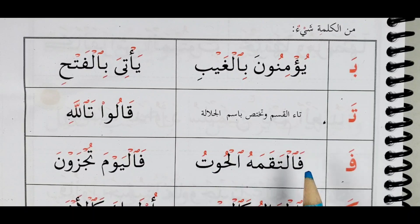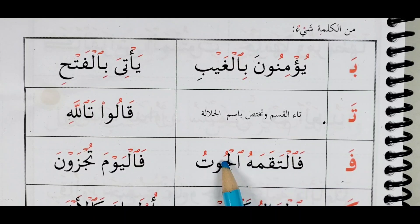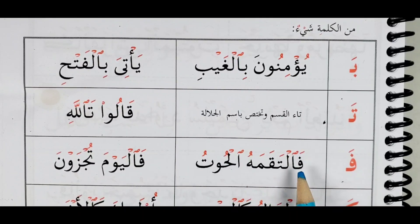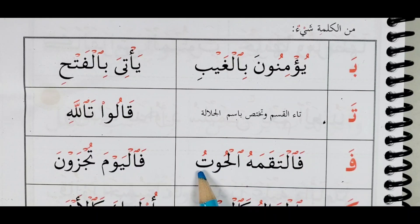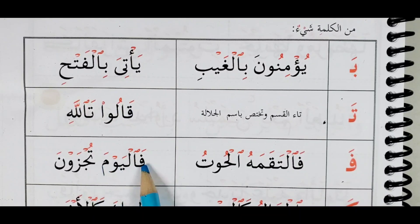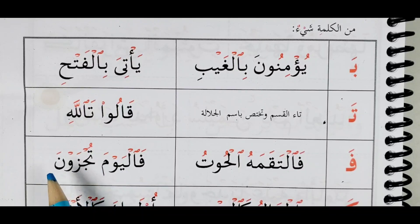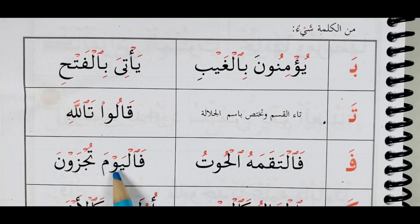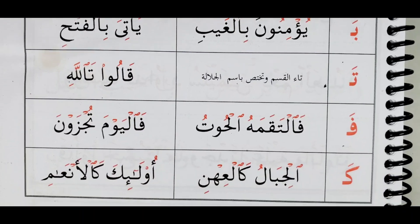Then فالتقمه الحوت — you come from the فاء to the لام, skipping sign and the ها. فالتقمه الحوت. Then we have فاليوم تجزون — فاليوم تجزون. Then the last example here with كاف.